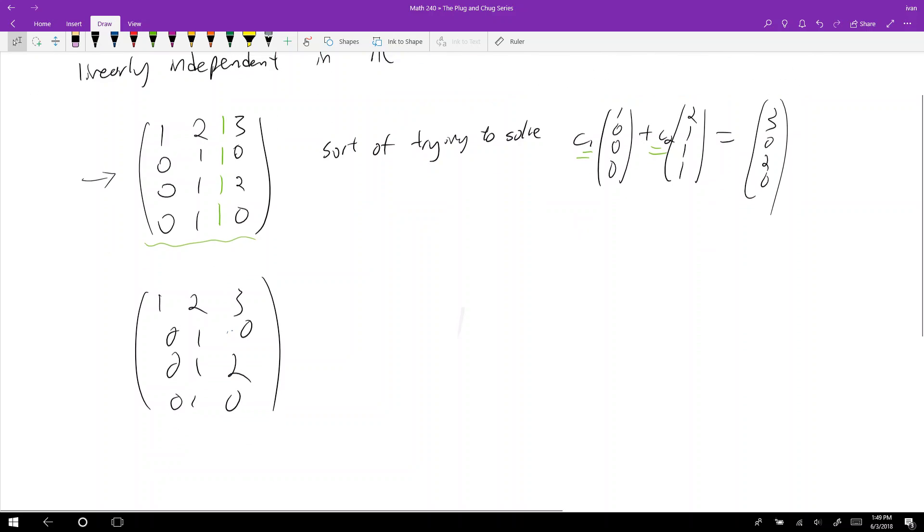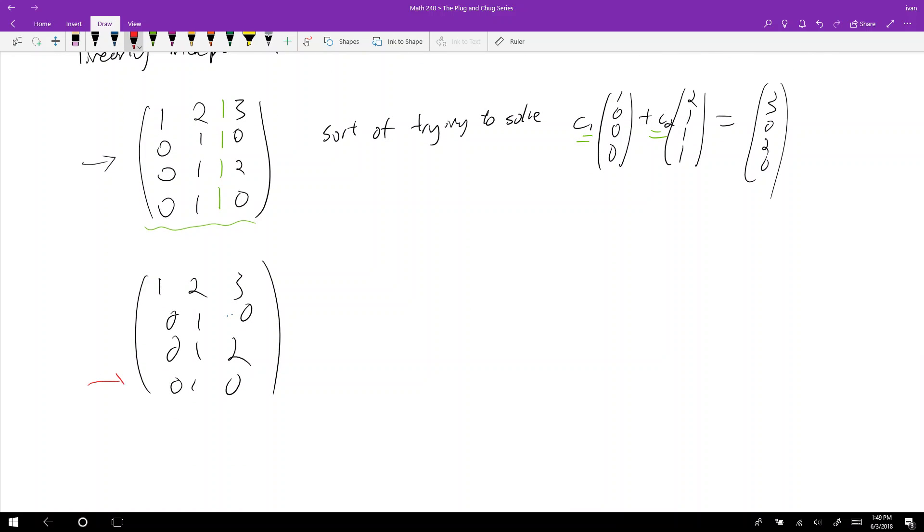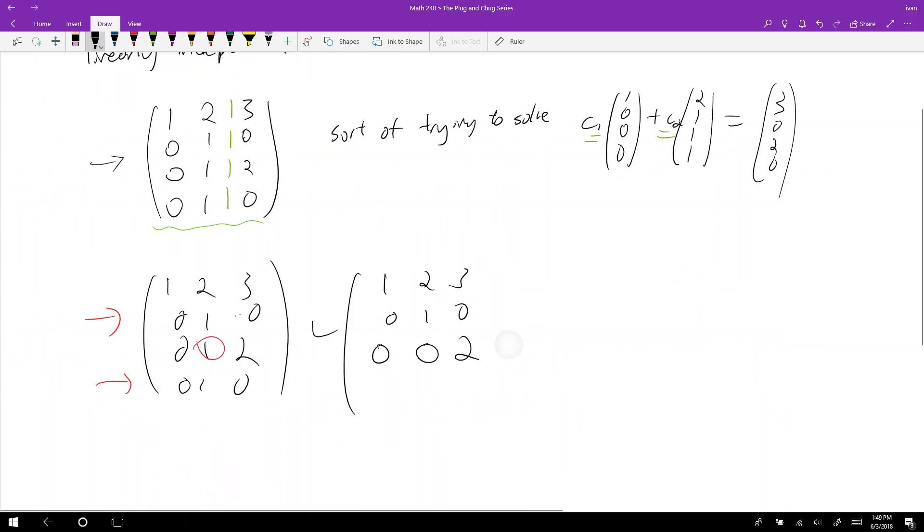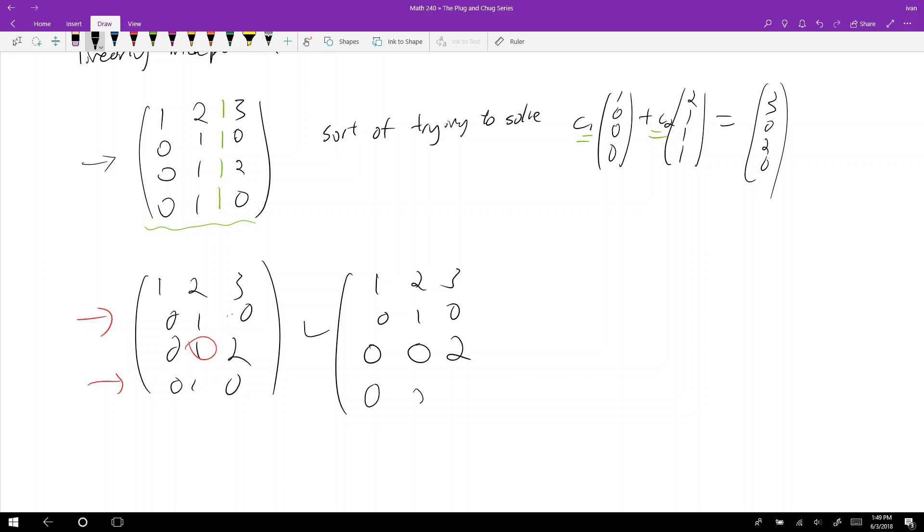Alright, so what I'm going to do then is we realize that these two rows are the same thing. And then I'm also going to zero this guy out. So what do I get? I get 1,2,3; 0,1,0; 0,0,2, right? Row 3 minus row 2. And this last guy then is just a row of 0s.